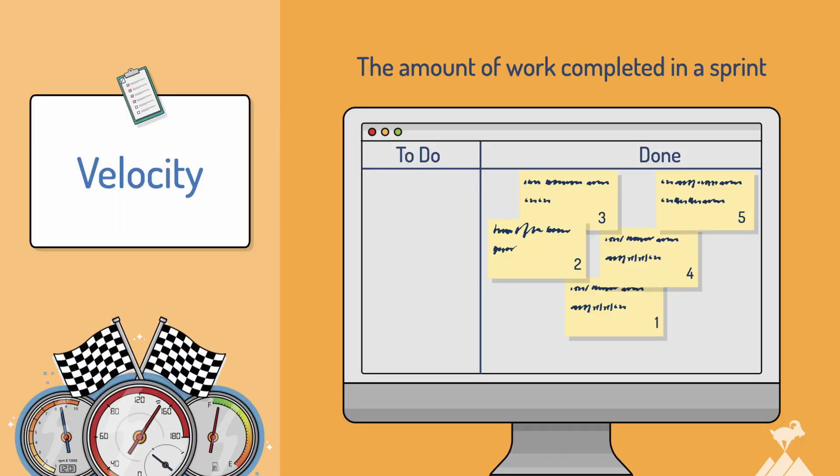Calculating velocity is straightforward. Add up the estimates assigned to each product backlog item that has been completed during the sprint or iteration. For example, if a team completes five backlog items in a sprint and they're estimated at 3, 5, 2, 4, and 1 points, the velocity for that sprint would be 15.